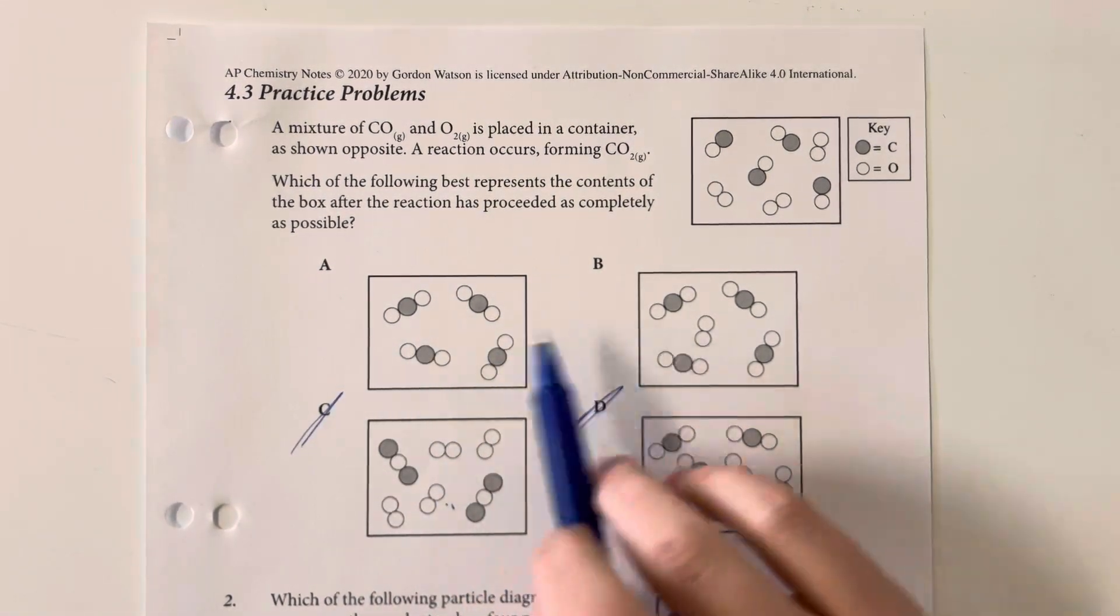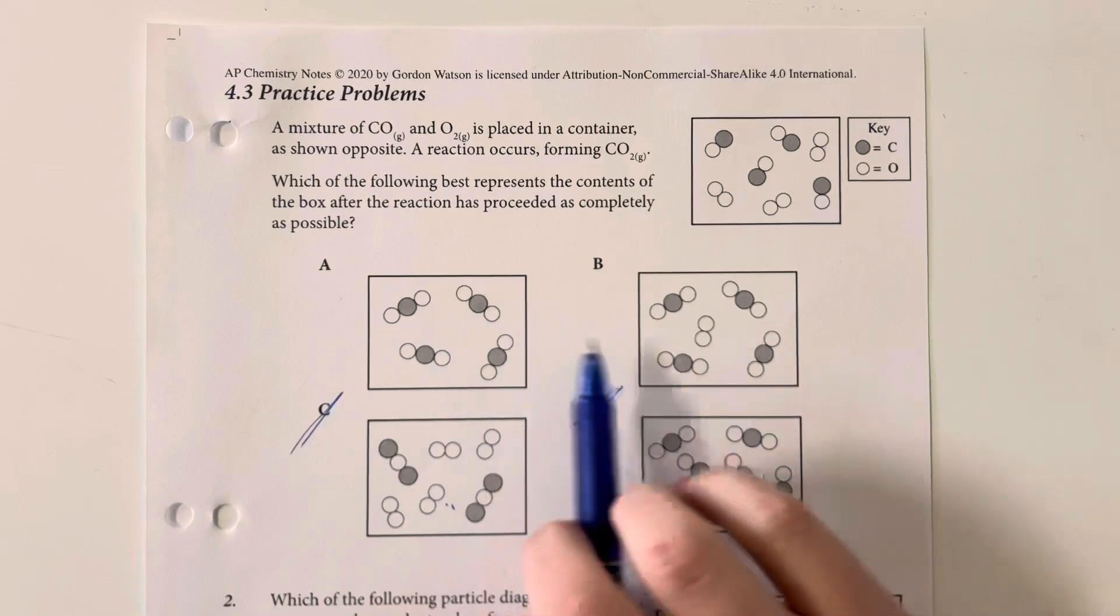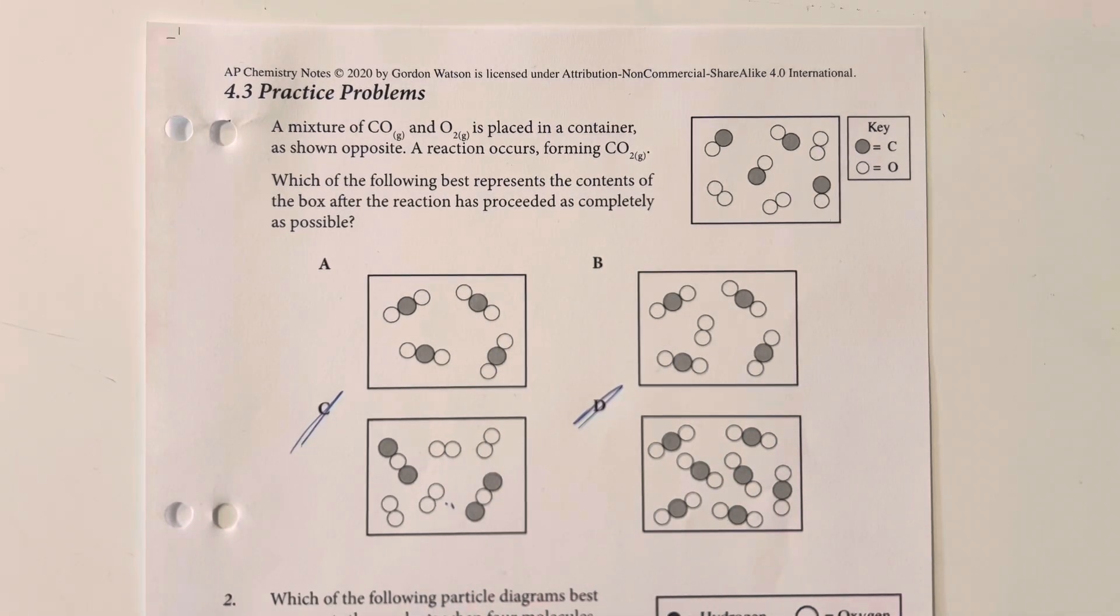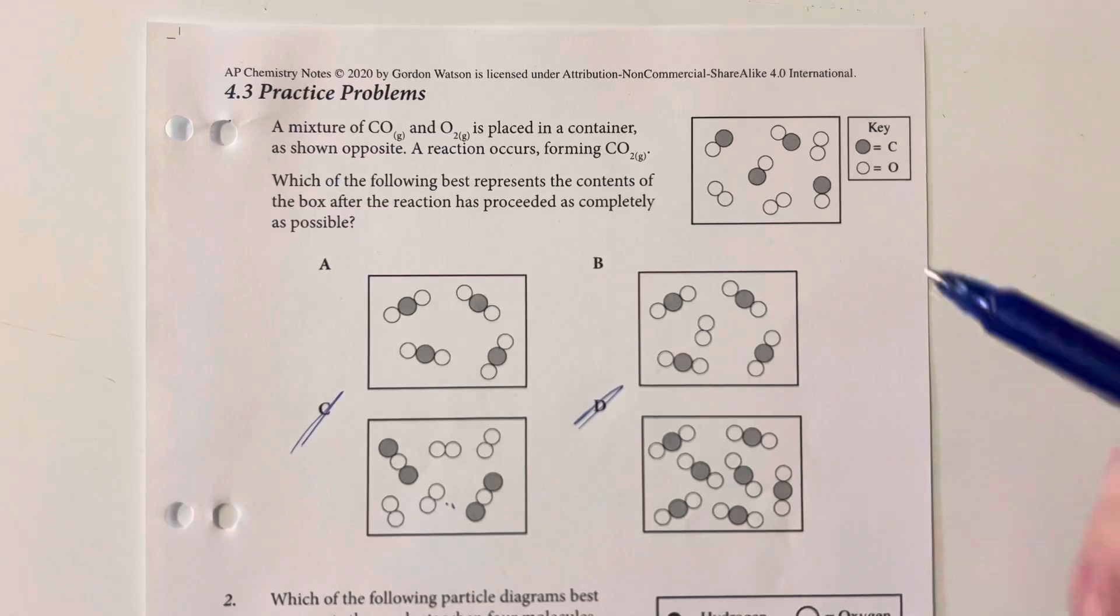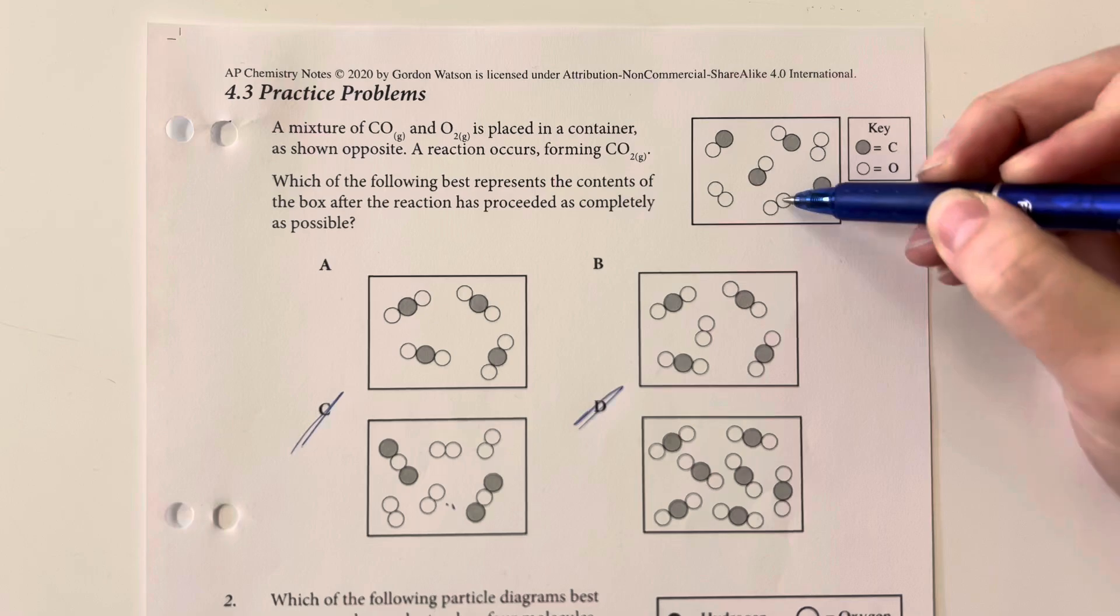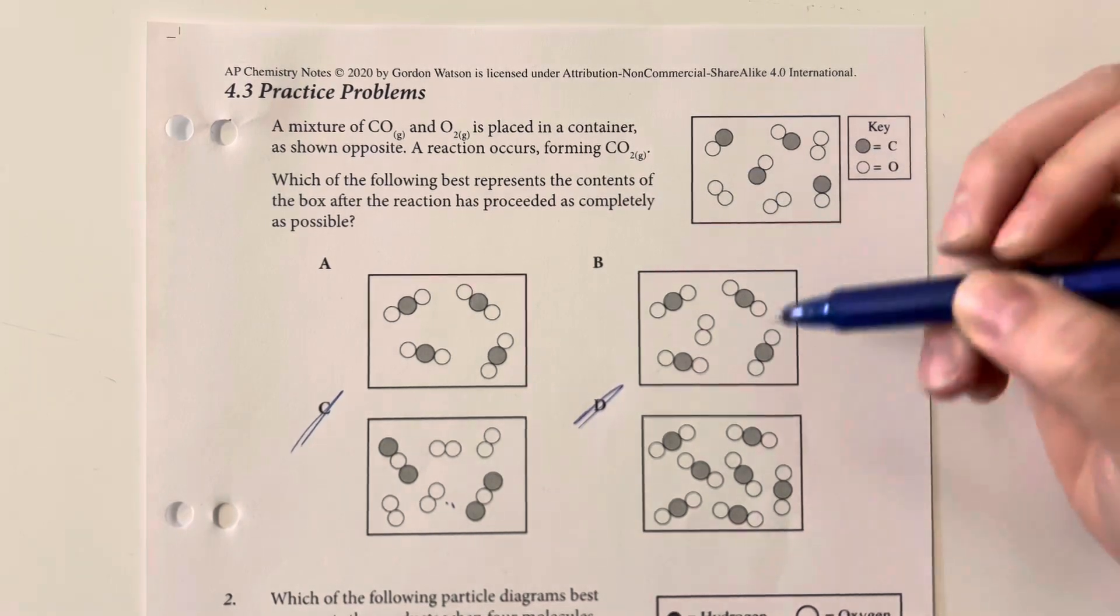Looking between A and B, I can see that the only difference is whether I have leftover oxygen or not, so that means I need to count how many oxygens I have present. So I have 1, 2, 3, 4, 5, 6, 7, 8, 9, 10 oxygens.